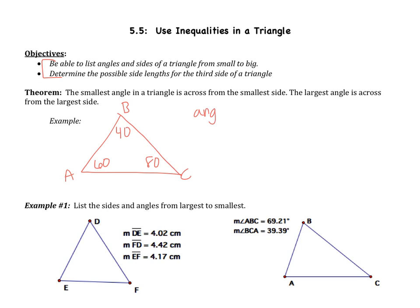Now the angles: the smallest angle is angle B, the medium angle is angle A, and the largest is angle C. So this is smallest to biggest. From here we can determine which sides are smallest and largest.